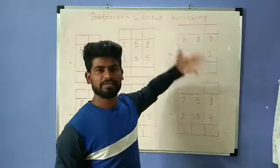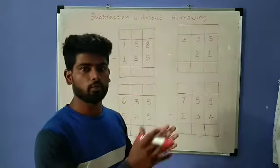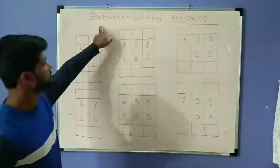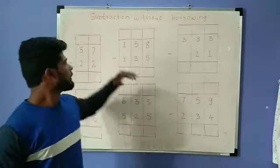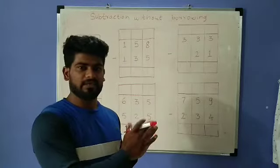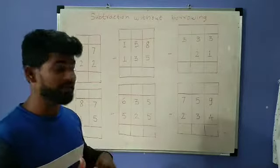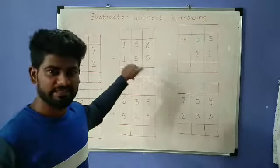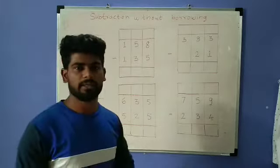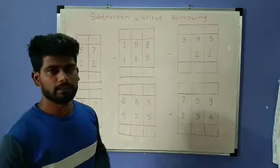The first topic should be subtraction without borrowing. Borrowing means taking something from anyone, like when we take a loan. But here, without borrowing means we're not taking help from anyone. We will solve subtraction without taking help from other numbers. Let's solve an example.